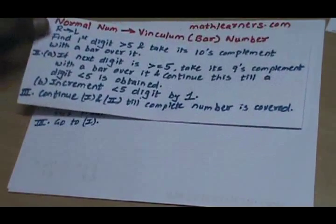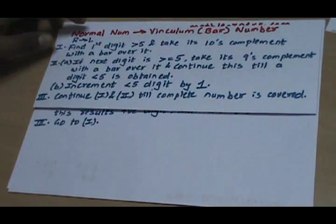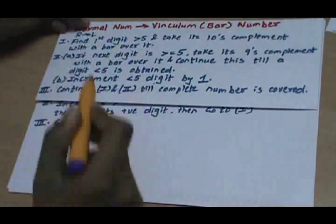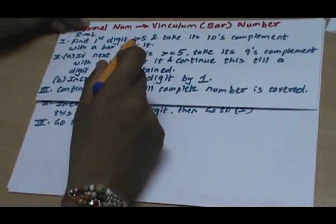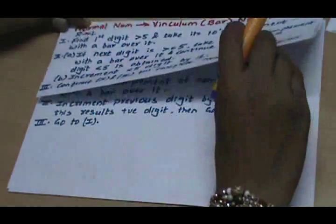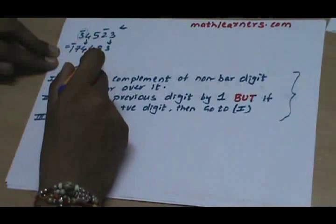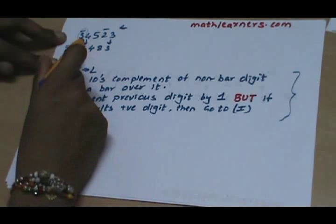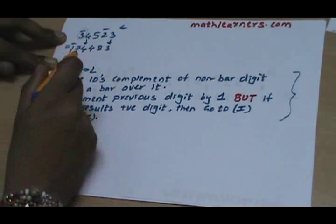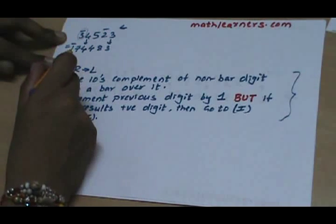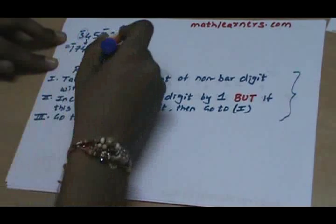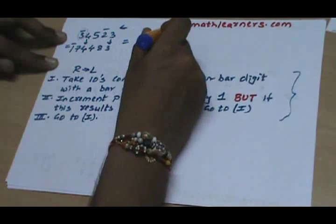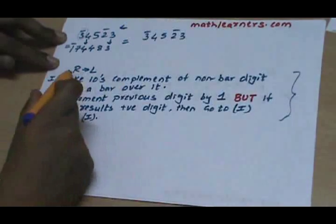In the last video we had seen an approach which converts any digit greater than 5 to a digit less than 5 — that was more specific, converting only digits greater than 5. Now for such kinds of numbers, what we need to do is convert each normal digit to a negative digit, so we need to have all digits as win-column digits.